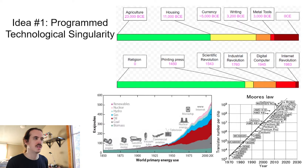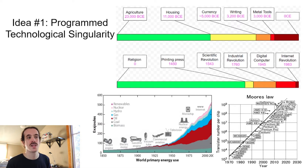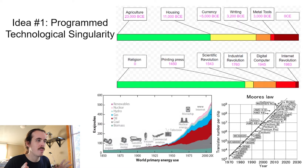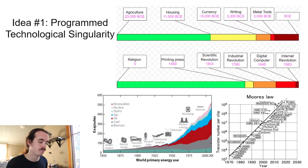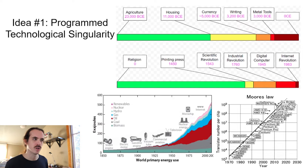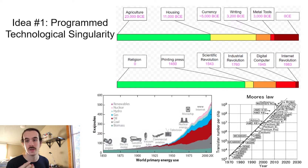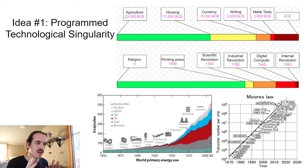We can look at these charts: 23,000 BCE we see the first agriculture in civilization, then 12,000 years later we see housing, 6,000 years later currency, 1,800 years later writing, and then 200 years later metal tools. Within these primary inventions of civilization, the time between each invention has been getting smaller and smaller. After each invention the whole system gets smarter and more efficient, allowing the next invention to come even faster - continuously compounding.